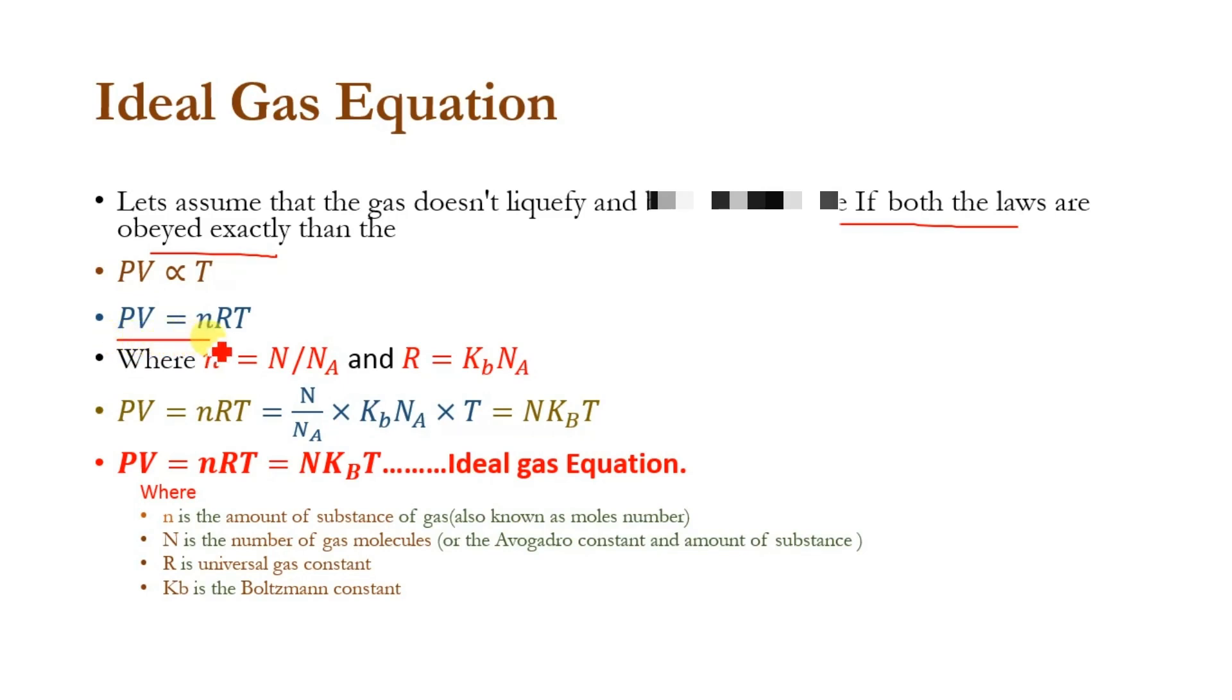In the ideal gas equation, pressure times volume equals nRT, where n is the amount of substance of gas, R is the universal gas constant, and T is the temperature.